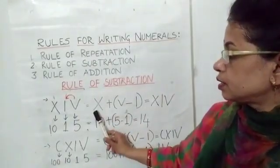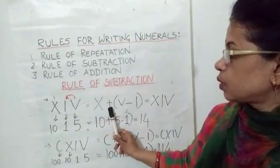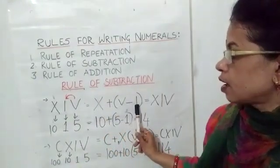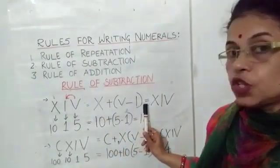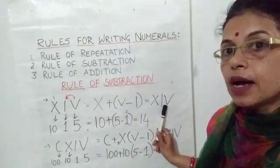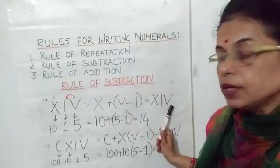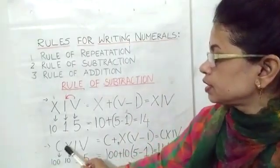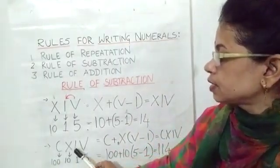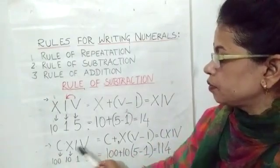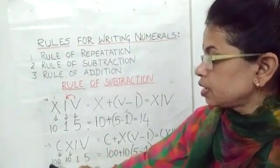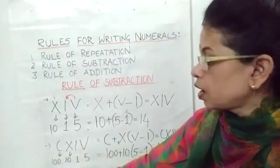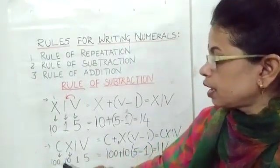That is X plus (V minus I), which becomes XIV. Second example: CXIV. C is equal to 100, X is 10, I is 1, V is 5.